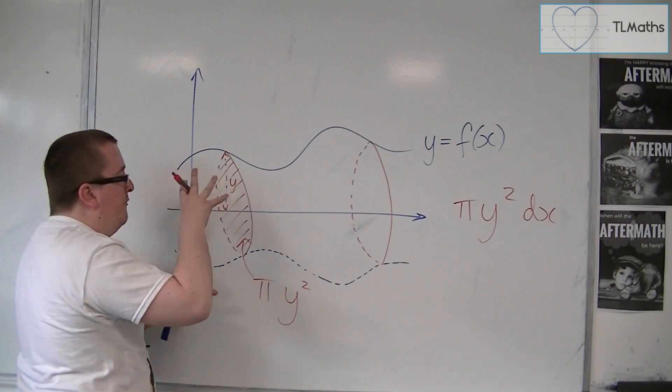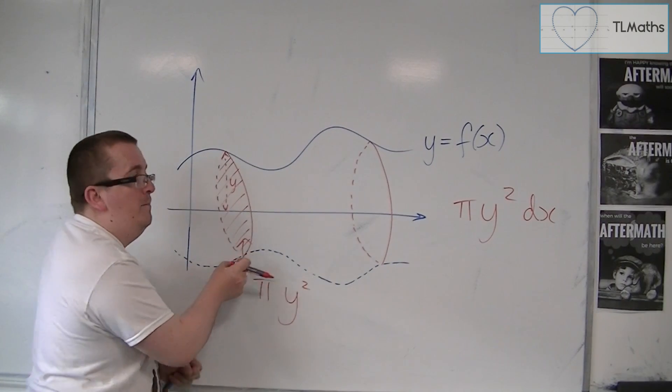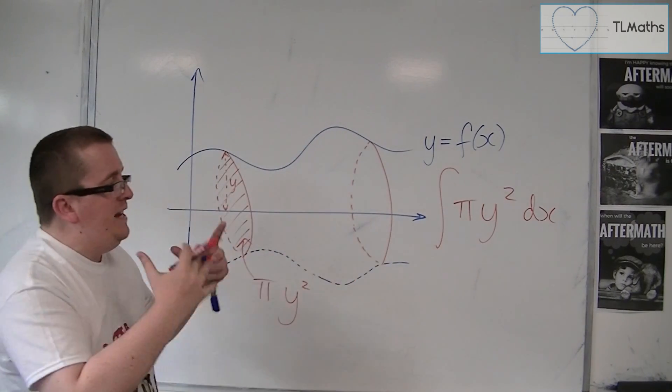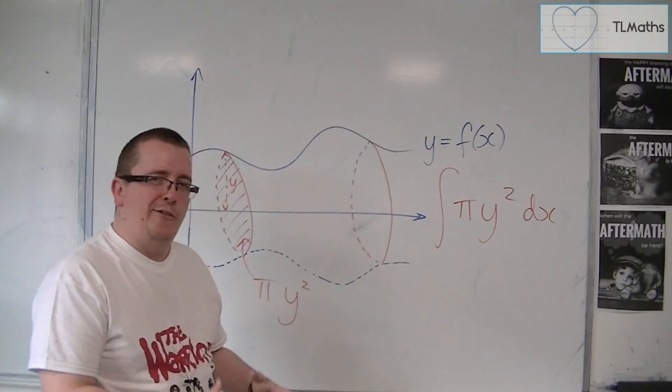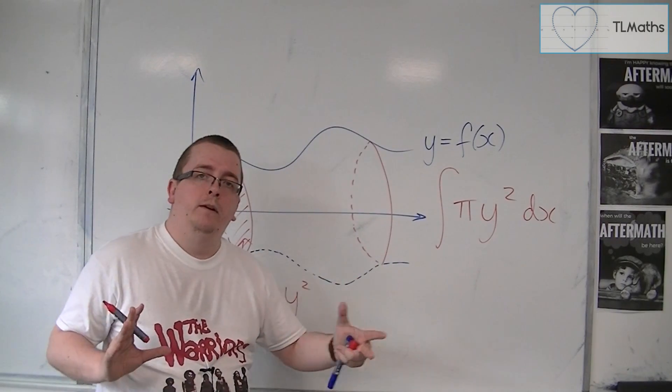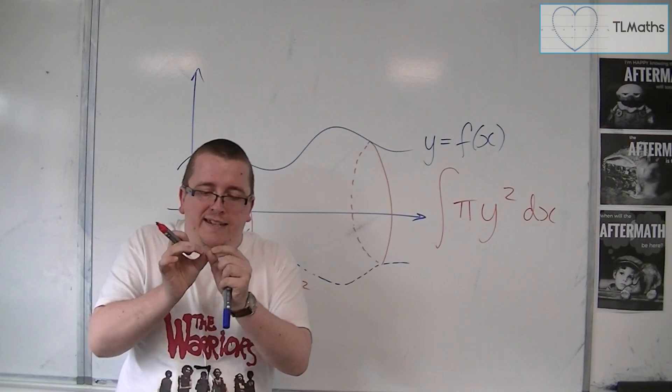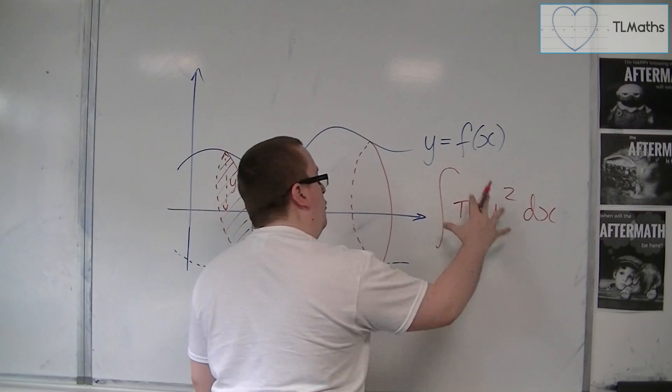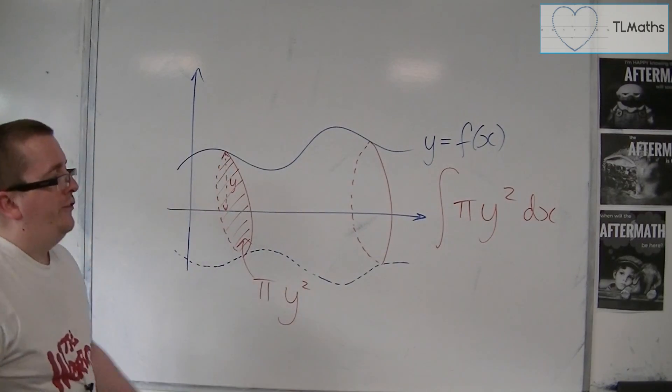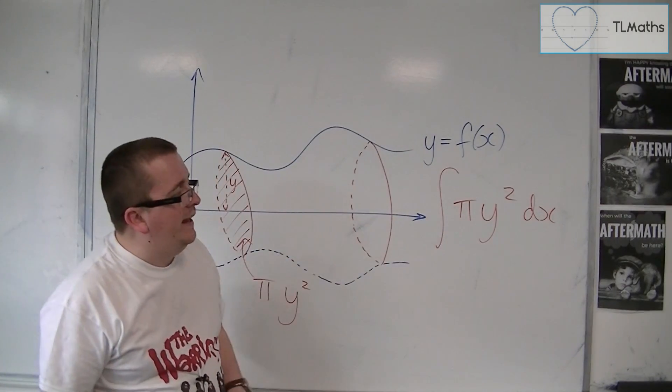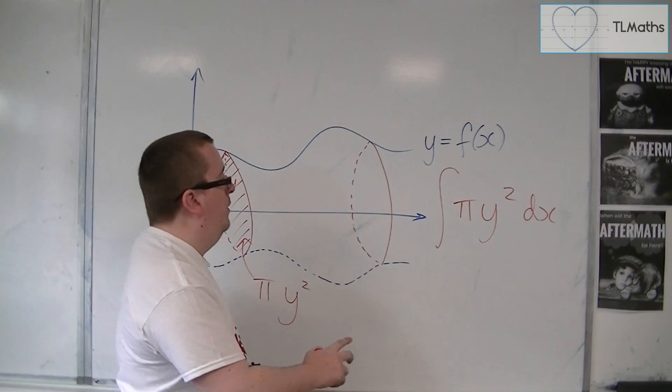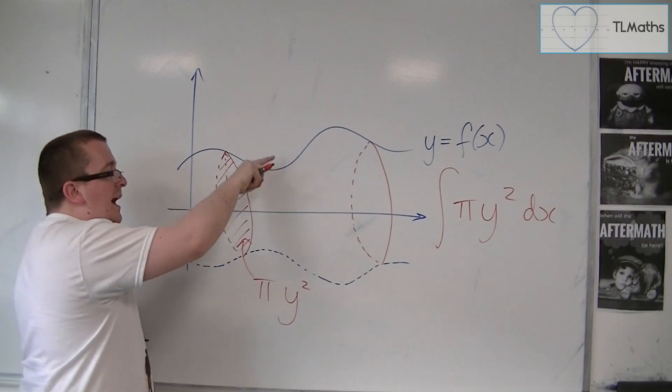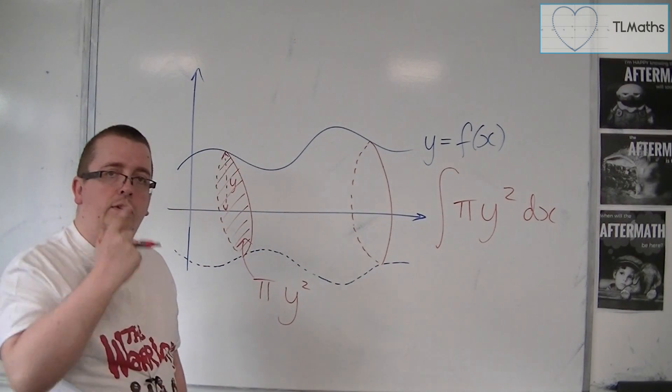To get the volume of that shape, you've got pi y squared, the area, multiplied by the width, and you're adding them all together. The integral symbol is effectively an infinite sum, adding up all these infinitesimally thin circles together. That is where the formula comes from. This will calculate the volume of the shape that is formed by rotating the curve about the x-axis.